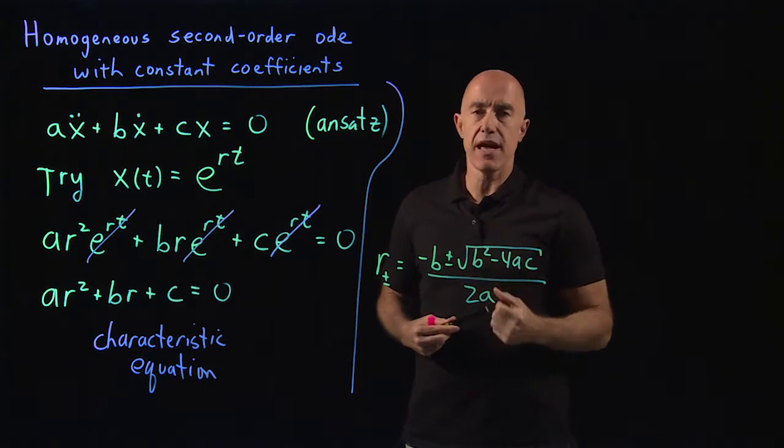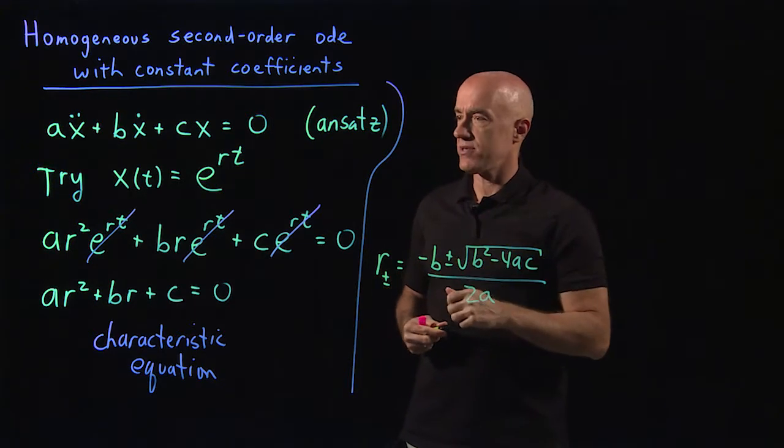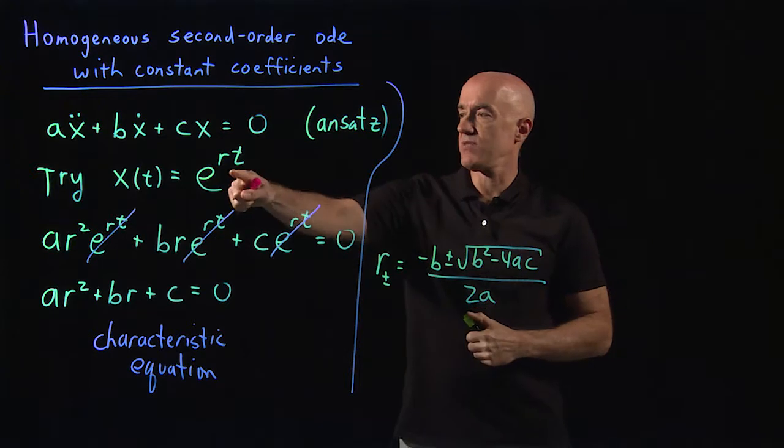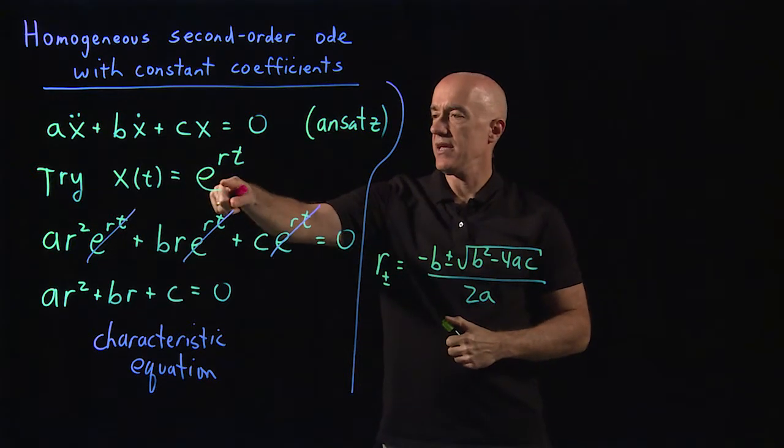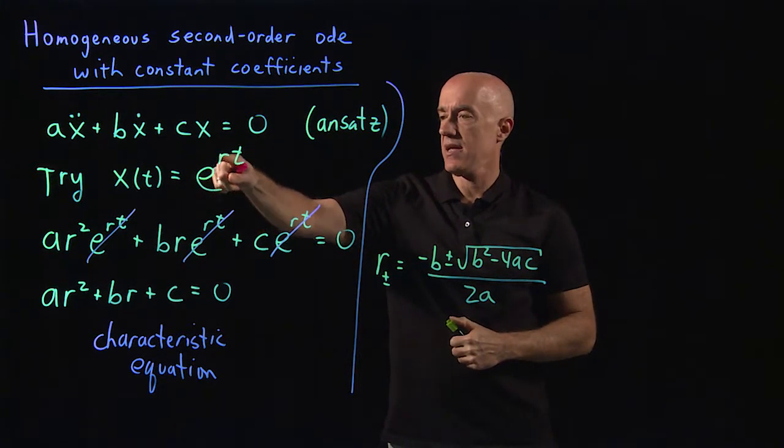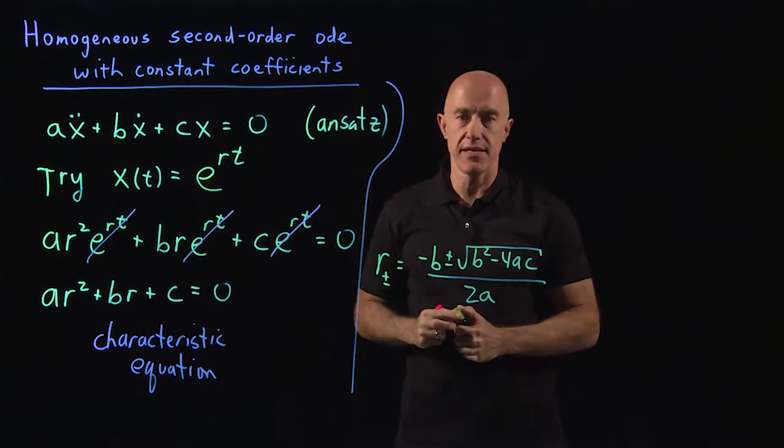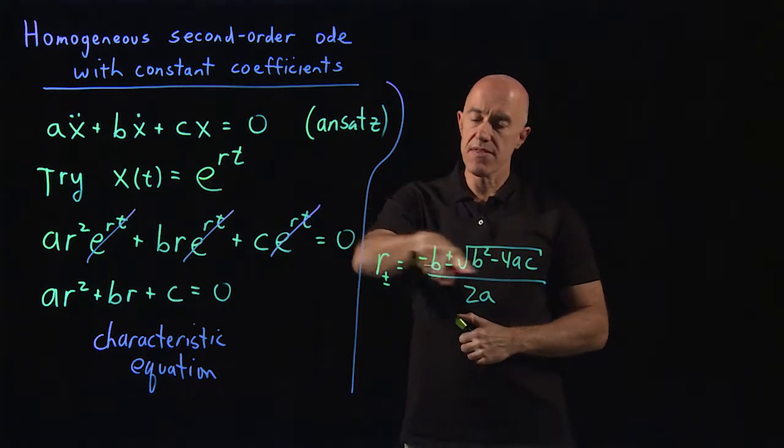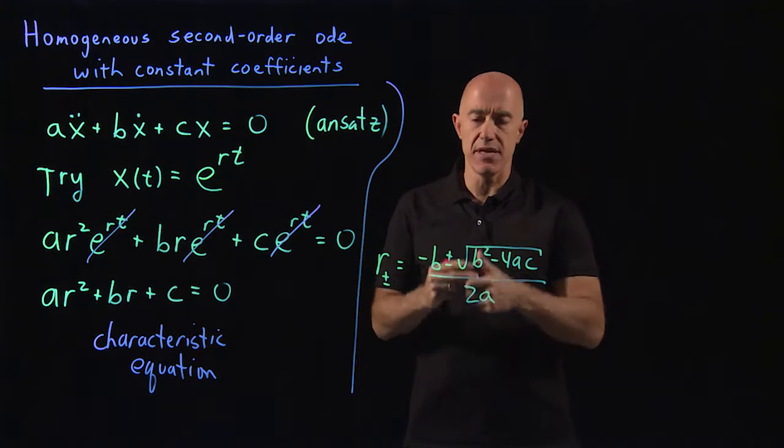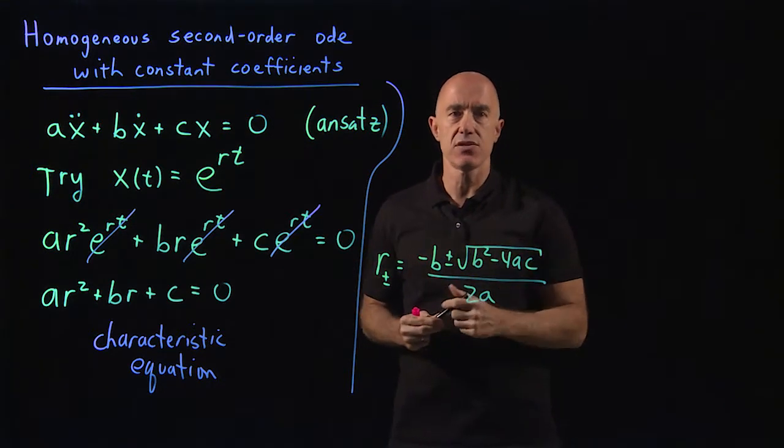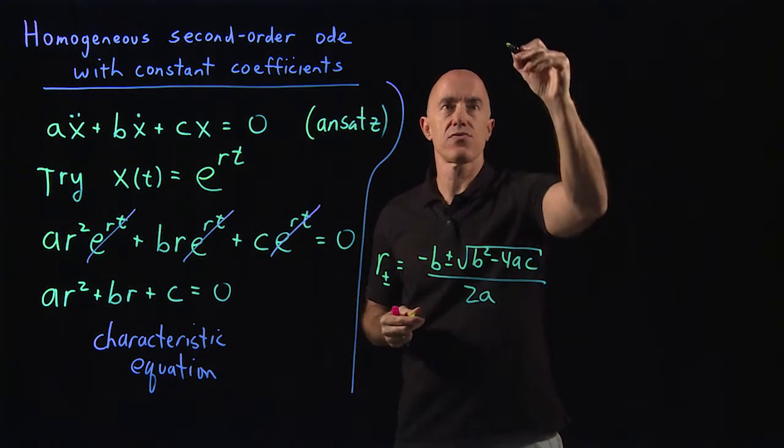But in this type of solution for two r's, remember, two r's means we have two functions, e to the r plus t and e to the r minus t, but three things can happen here that we have to pay attention to. So what are those three things?